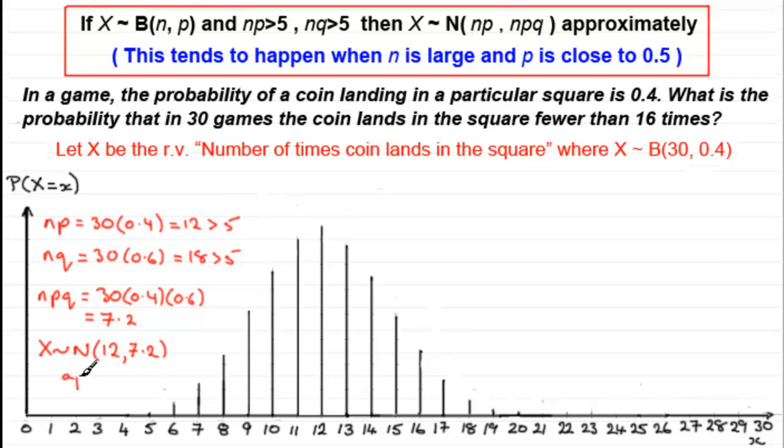So X is distributed normally with a mean of 12, variance 7.2, but approximately. So we better put that in. I'll just say approximately. And what I'll do is we'll just put a curve around that distribution, illustrating this normal distribution. So how do we go about working out the probability that X is less than 16?